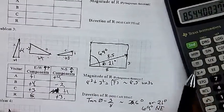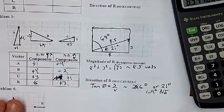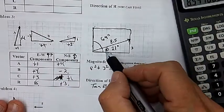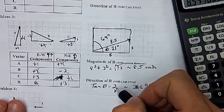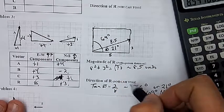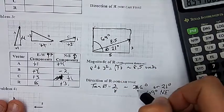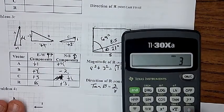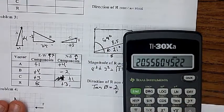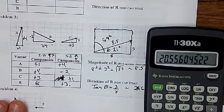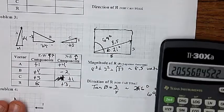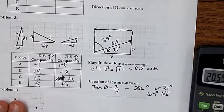Now remember SOHCAHTOA, kind of what I showed you guys in class today. So tangent of this angle — tangent theta — is going to equal the opposite over the adjacent side. So I put three divided by eight equals, that gives me some number, and then I hit second tangent. So that's about 20.6 degrees, or if you round it to the nearest degree, that's about 21 degrees.